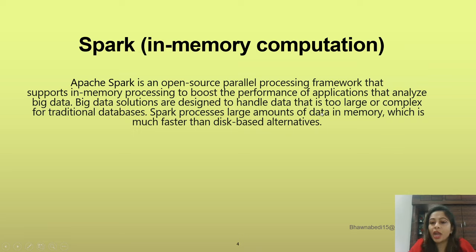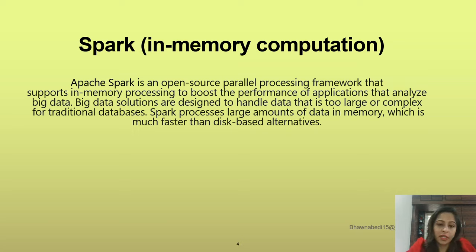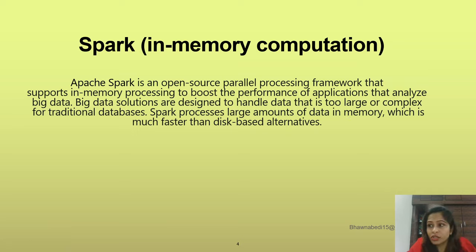Big data solutions are designed to handle data that is too large or complex for traditional databases. Traditional databases have structured data and cannot process big data, which has different formats. Traditional databases cannot handle semi-structured or unstructured formats, and they also cannot handle such large volumes of data. Spark can actually do that. Spark processes large amounts of data in-memory, which is much, much faster than disk-based alternatives. What is a disk-based alternative? That is MapReduce — MapReduce is a disk-based alternative.